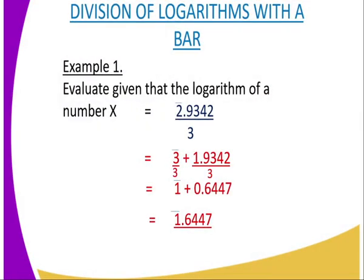The first question is division of logarithm with a bar. Example one: evaluate given that the logarithm of a number X is equal to 2̄.9342 divided by 3. What you are supposed to do is make the bar become a factor from the denominator. Because you have a bar 2, you are supposed to subtract 1.